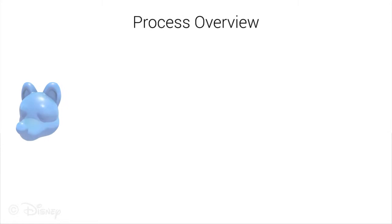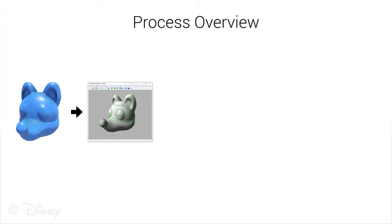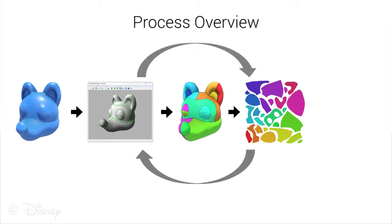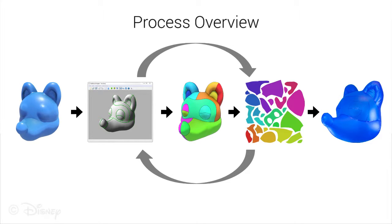The workflow of our system aims to be simple and intuitive. As input, we take a 3D model representing the 3D target shape. The user provides an initial guess for the patterns by drawing seams on the 3D model. Our physics-based optimization computes optimal patterns such that the inflated shape matches the target as closely as possible. Our system is fast enough to allow interactive exploration of seam layouts. The designs produced by our system are feasible and can be used to fabricate inflatable structures. In the following, we will demonstrate the design process in more detail.